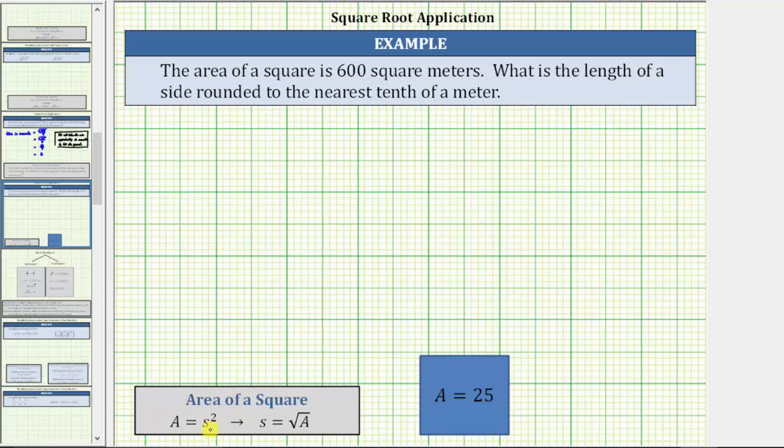But because A equals S squared, or A equals S times S, it's also true that the side length S equals the square root of the area A.